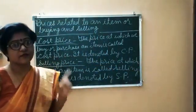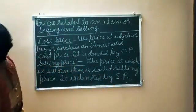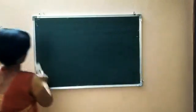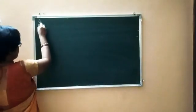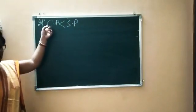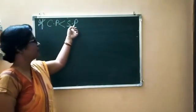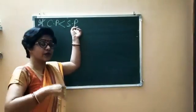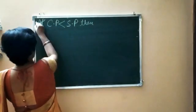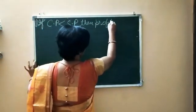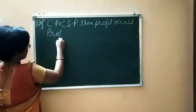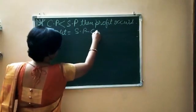Now we will see the cases related to cost price and selling price. Case 1: CP is less than SP. Suppose we are purchasing a pen at rupees 8, but we are selling the pen at rupees 10. We purchased it for 8 rupees but sold it for 10 rupees, so we have a profit of rupees 2. Then profit occurs. Profit equals SP minus CP.